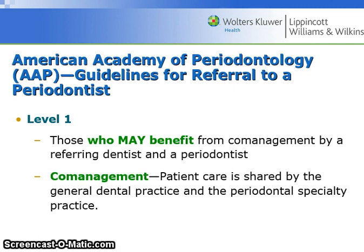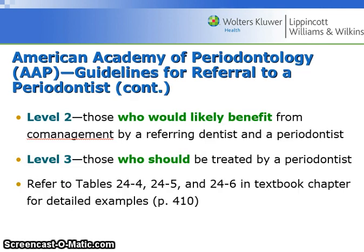The American Academy of Periodontology has guidelines for when to refer to a periodontist. Level 1 is the patient who may benefit from co-management with a periodontist, meaning patient care is shared by the general dental practice and the periodontal specialty practice. Level 2 are those who would likely benefit from co-management. Level 3 are those who should be treated by a periodontist. Refer to page 410, tables 24-4 through 24-6 in your textbook for detailed examples.